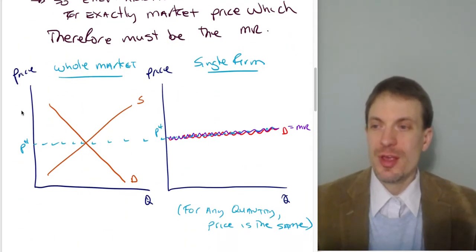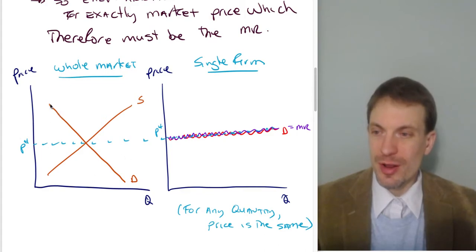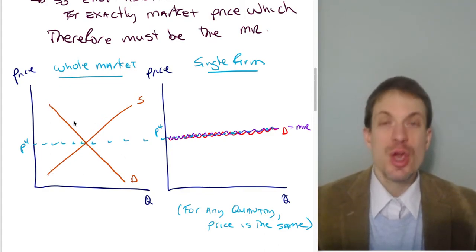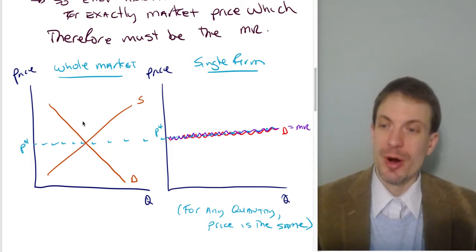Here's the picture. Here's my entire competitive market. Here's my market demand curve, my market supply curve, where they intersect is the market price and the market quantity.